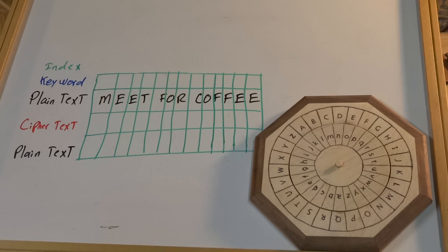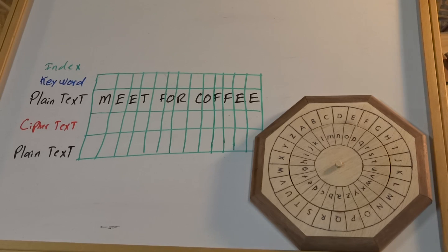Now it's a little bit tougher to create, but then again it's also harder to crack, so they kind of go hand in hand. A keyword cipher will consist of a couple of pieces, and it's going to be a little bit different from the other two we created.